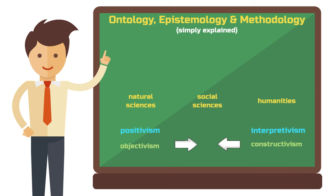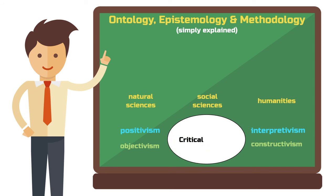As you may have noticed, there is always a specific epistemology that aligns with an underlying ontology. A positivist epistemology corresponds to an objectivist ontology. An interpretivist epistemology aligns with a constructivist ontology. There are, of course, other positions, like critical realism, but that would be the subject of another video.